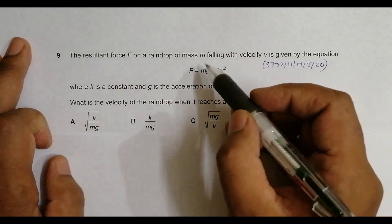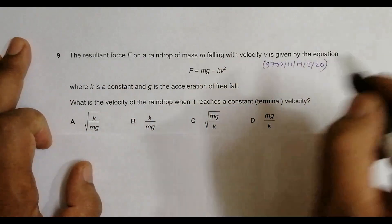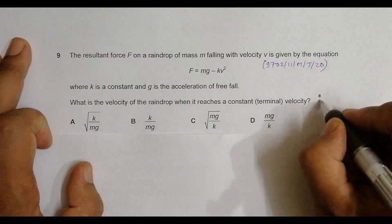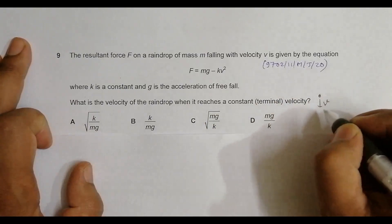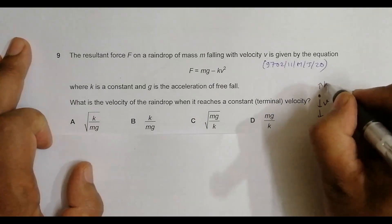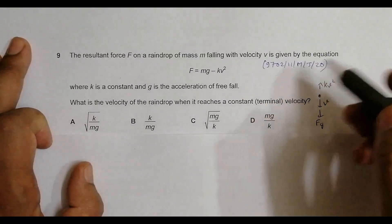The resultant force F on a raindrop of mass m falling with velocity v is given by the equation. So we have a raindrop falling with a certain velocity, and the force on it is mainly the force of gravity and the opposing force is kv squared. It is concerned with the drag force actually.